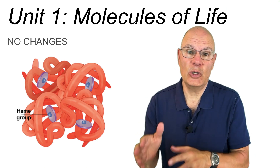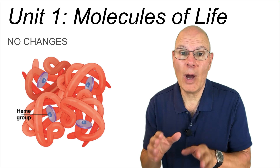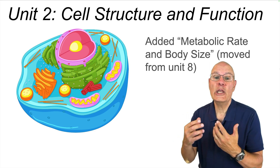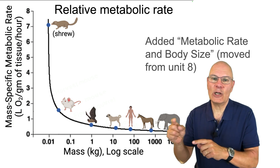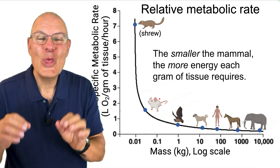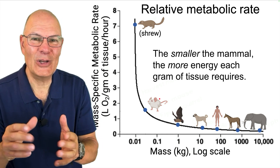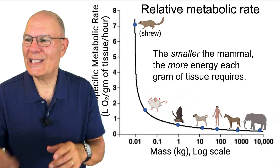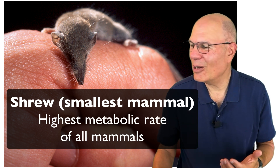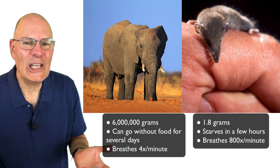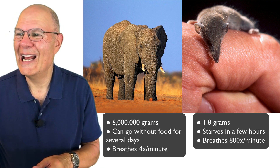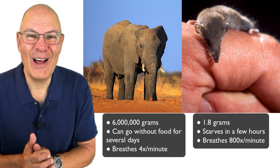Now let's look at some of the other units of AP Bio where the changes for 2025 aren't quite as big. In Unit 1, there are essentially no changes. In Unit 2, cell structure and function, the only change is that the College Board added metabolic rate and body size, a topic that used to be in Unit 8. Among mammals, the rule is that the smaller the mammal, the more energy each gram of tissue requires. If you think of metabolism as a kind of engine, the engine involved in the metabolism of a shrew is revving at a much higher level than that of an elephant. An elephant can go days without food; a shrew, if deprived of food for just a few hours, will starve to death. An elephant breathes about four times a minute; a shrew breathes about 800 times a minute. You will love learning about this topic.